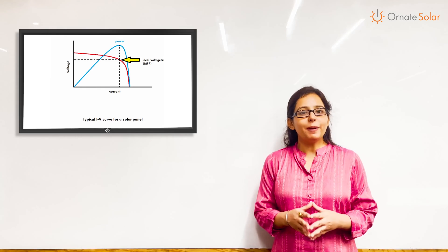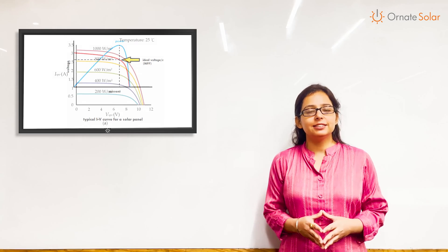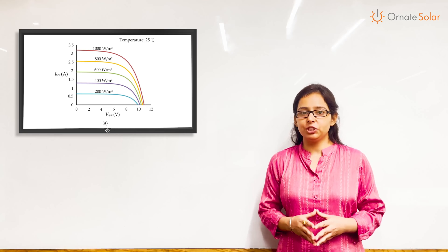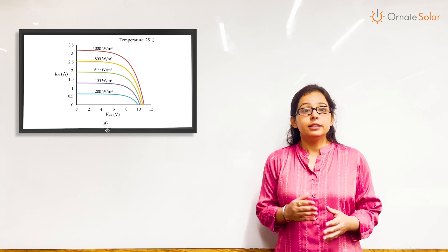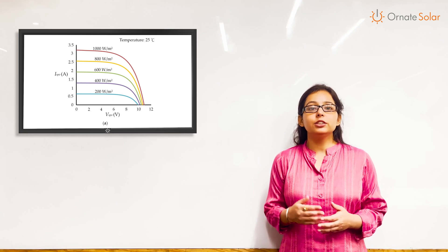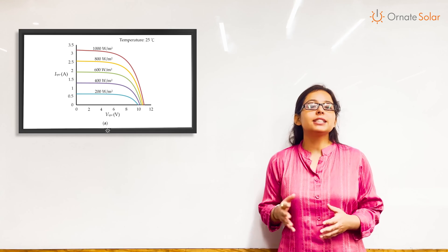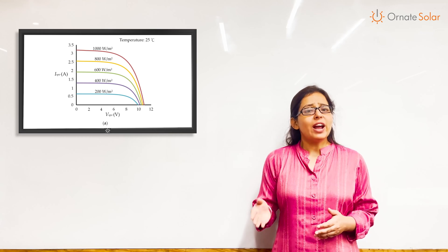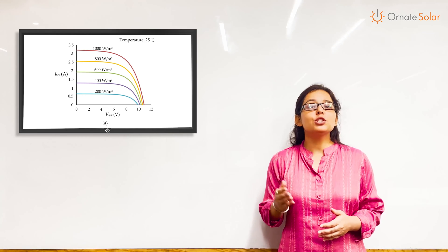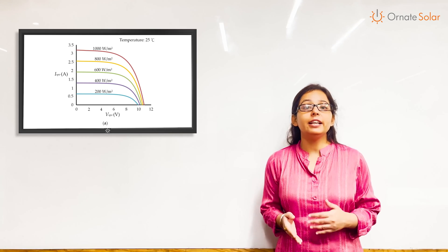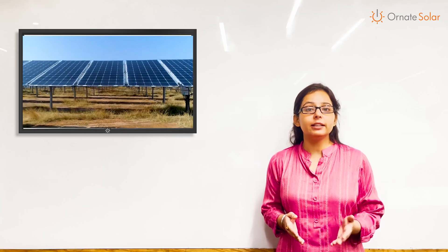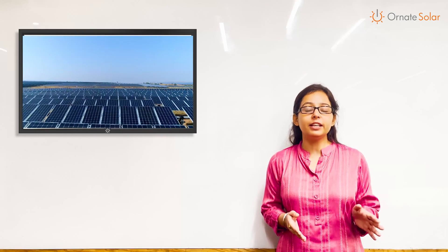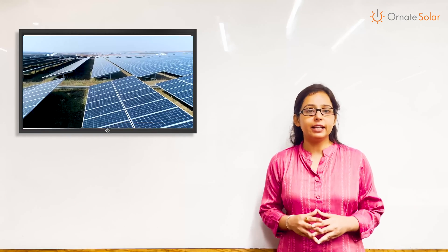As the voltage of a panel changes, its MPP also keeps shifting. This is why solar inverters use a maximum power point tracker. MPPT tracks the shifting MPP of a solar panel and ensures that the panel always keeps working at that level, no matter if it's sunny or shaded outside.